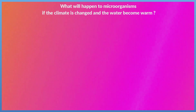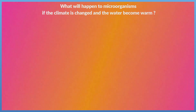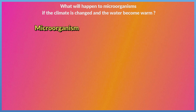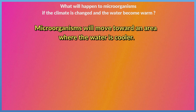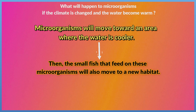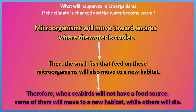What will happen to microorganisms if the climate changes and the water becomes warm? Microorganisms will move toward an area where the water is cooler. Then, the small fish that feed on these microorganisms will also move to a new habitat. Therefore, when seabirds no longer have a food source, some of them will move to a new habitat, while others will die.